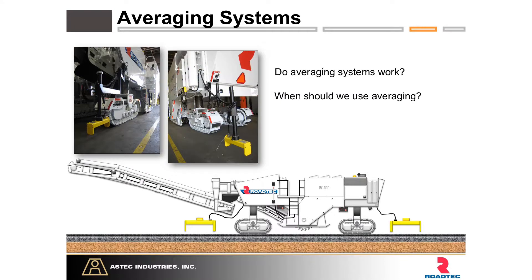Averaging systems use sonic sensors that send sound pulses to the ground and measure the time it takes for the sound to travel to the ground and back to the sensor. These sensors are placed on each side of the machine, and a number of sensors send these sound pulses. The measurements are then averaged, so when there's an outlier or large component that could throw off the measurement, it's averaged among three sensors rather than one sensor causing a drastic unnecessary correction.